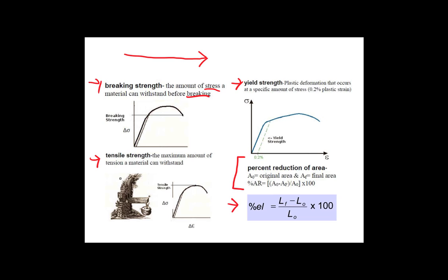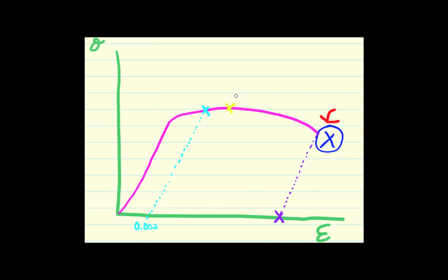Now the next definition is tensile strength and the tensile strength is the maximum amount of tension a material can withstand. It is a stress also and it's the topmost point of the curve. So going back here, the tensile strength would be this x right over here.